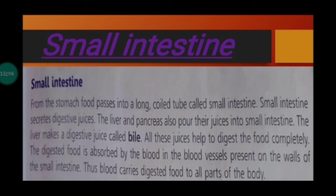The small intestine digests food completely, sends digested food into the blood, and passes waste to the large intestine. From the stomach, food passes into a long coiled tube called the small intestine. The small intestine secretes digestive juices. The liver and pancreas also pour their juices into the small intestine.